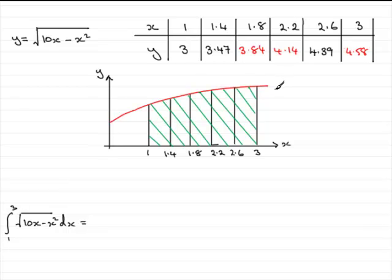Here's the curve of y equals the square root of 10x minus x squared with our table of values for x going between 1 and 3. And if we're to work out this integral approximately, we're going to work out an approximation by looking at the area of the trapeziums.